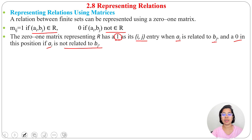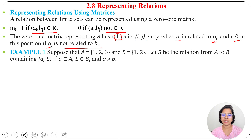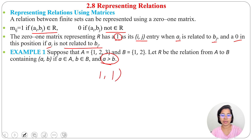If A is related to B, then it will be 1. If A is not related to B, it will be 0. Let's see one example. Suppose A contains {1, 2, 3} and B contains {1, 2}. Let R be the relation from A to B containing pairs (a, b) where a belongs to A, b belongs to B, and a is greater than b.